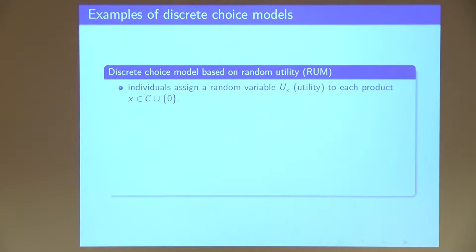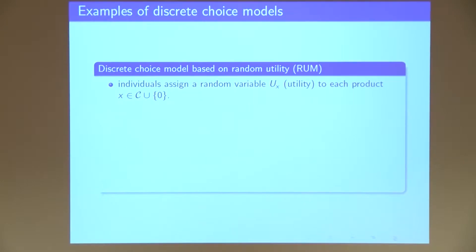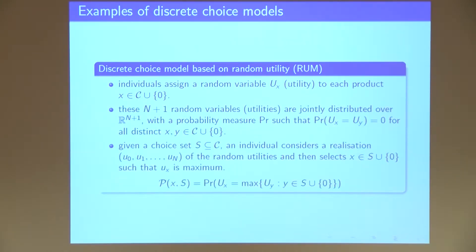There are many more models. A very general model is random utility, where each element is assigned a random variable, and they can have a correlation. When the customer comes into your store, they see a realization of these variables and select the one with the maximum utility among the set of available items. Formally, the probability that someone selects item X is the probability that the utility of that item is the maximum among all other utilities in the subset, including the no-choice option.